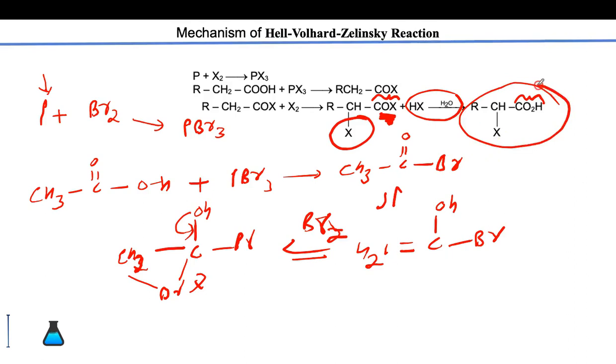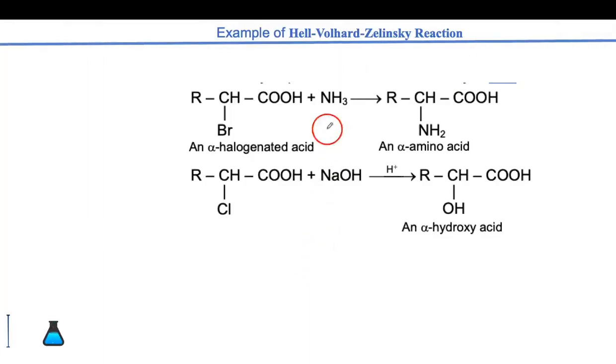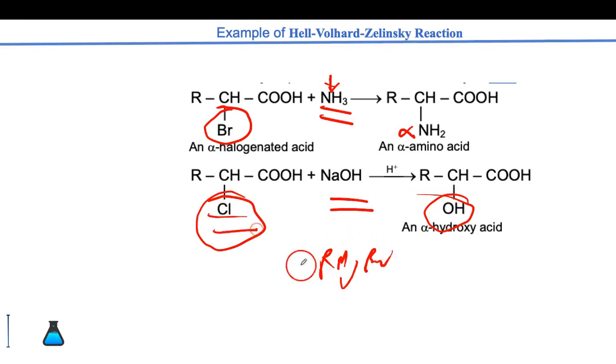Now let's see the uses of this reaction. If you treat this with liquid ammonia, you will get alpha amino acid. This bromine will easily be replaced by any nucleophile. With OH minus, you will get CL replaced by OH. With Grignard reagent RMGBR, the CL will be replaced by R. So you can easily replace the alkyl group with any nucleophile you want to add at the alpha position of the COOH group.